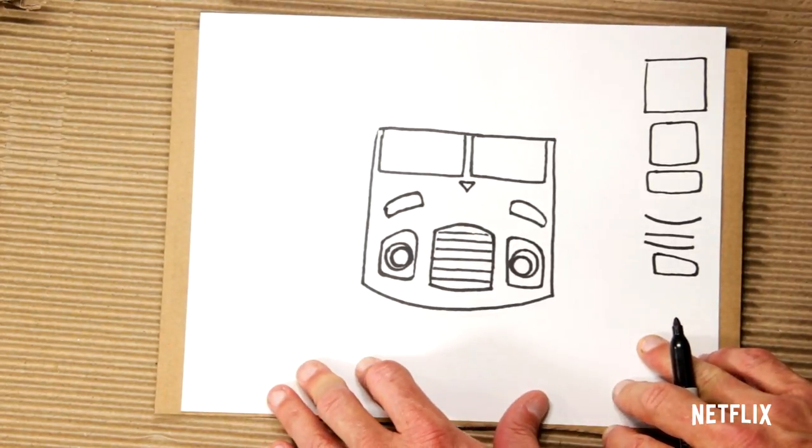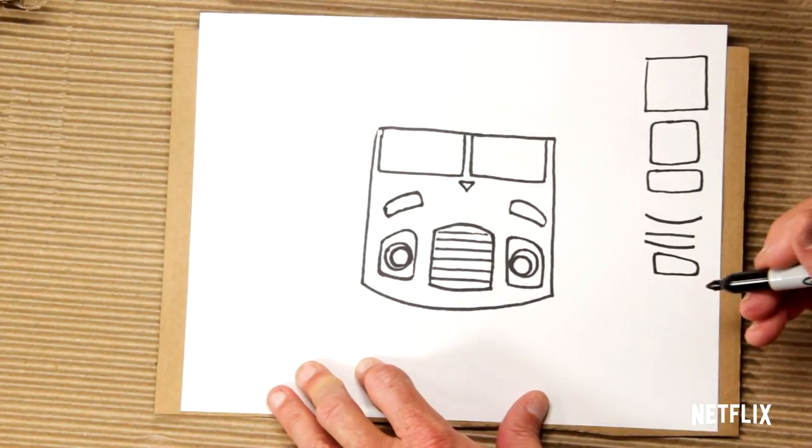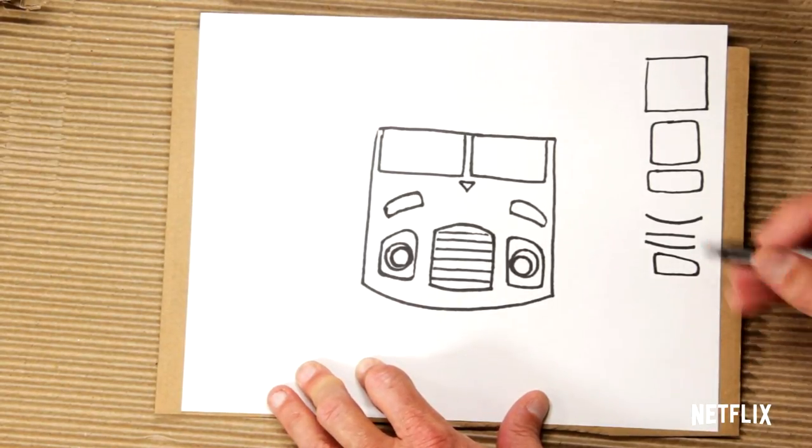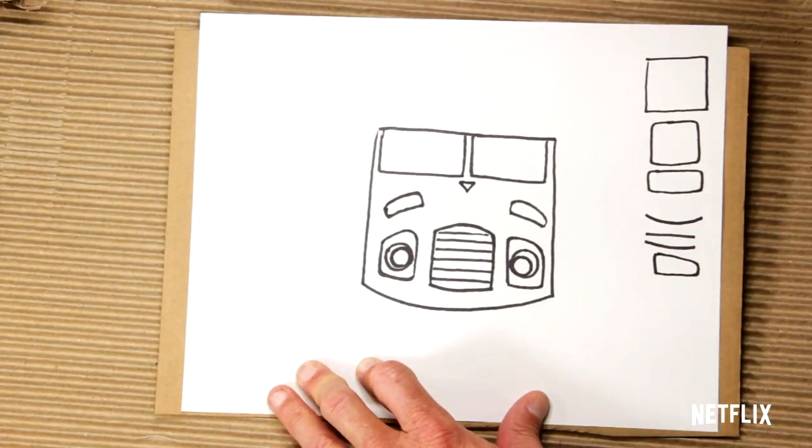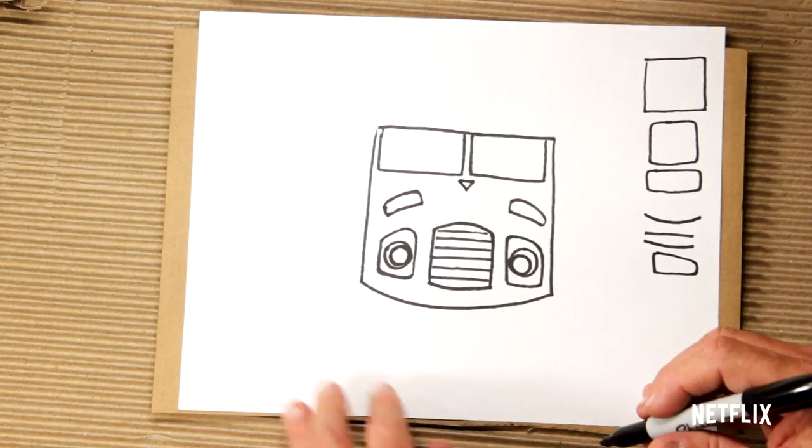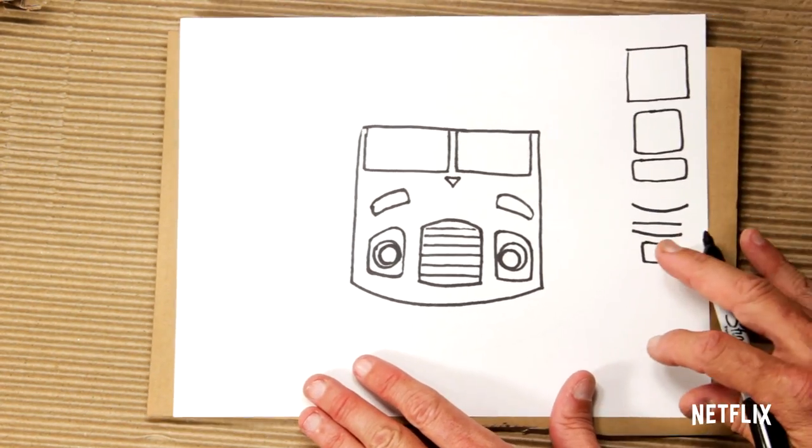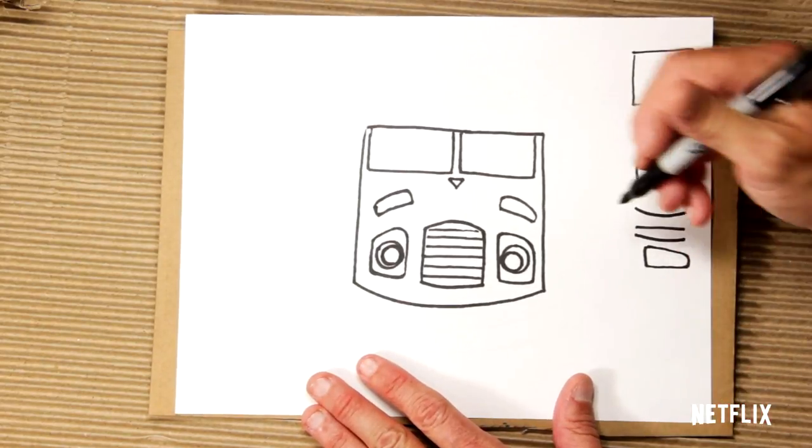Now let's do his bumper. Actually, let's finish off his head. Now let's do the bumper. Okay, we're going to do the bumper here. And the bumper is a little tricky because it's a few lines, but we'll go slow.